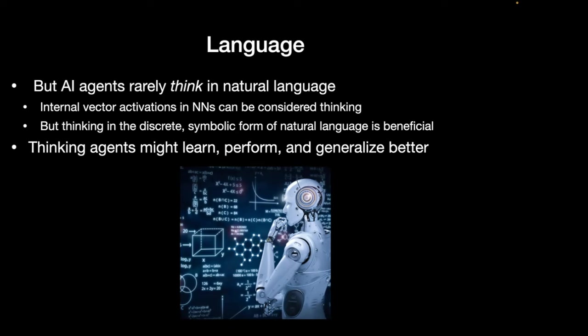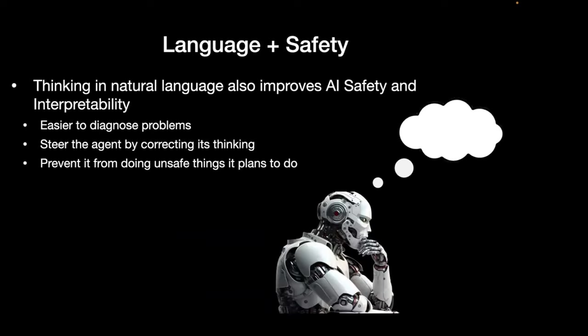Our AI agents almost never think in natural language. My VPT Minecraft agent doesn't have any language — it's just acting, like it has the instinctual muscle memory of system one thinking. It doesn't have system two thinking where it's planning and deliberating. Cognitive scientists have argued there are benefits to thinking in discrete language symbols that we can combine and compose, rather than just thinking in raw neural activations. Thinking agents might learn to perform better and generalize better.